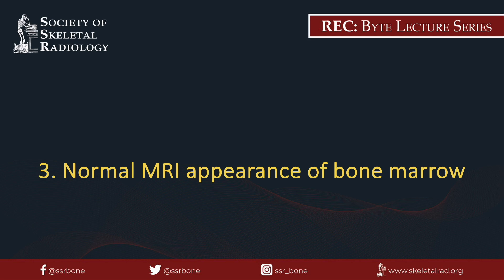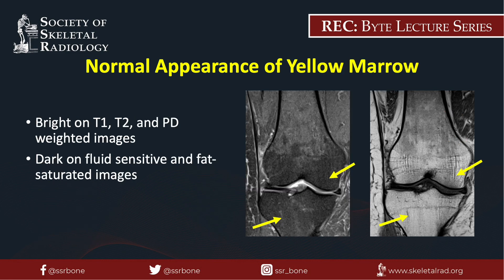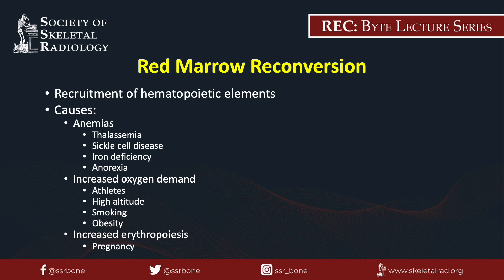Red marrow should be intermediate in signal on both fluid-sensitive and T1-weighted sequences and should be brighter than muscle on T1-weighted sequences. Within the long bone, red marrow should be most pronounced within the proximal metaphysis. Yellow marrow, given its predominance of fat, should be bright on T1, T2, and proton density weighted sequences and dark on fat-saturated and fluid-sensitive sequences. Red marrow reconversion represents the physiologic recruitment of hematopoietic elements. Causes include anemias, increased oxygen demands, and physiologic states of increased erythropoiesis, for example during pregnancy.